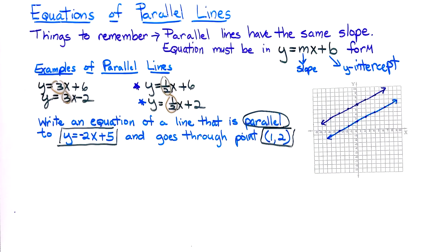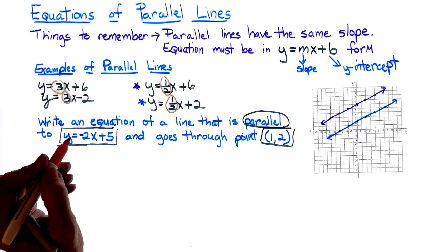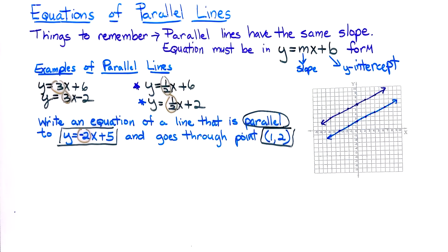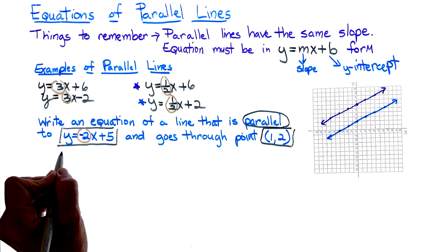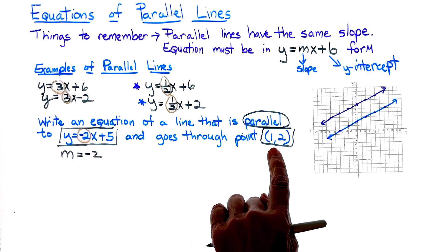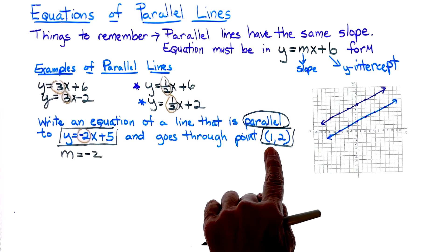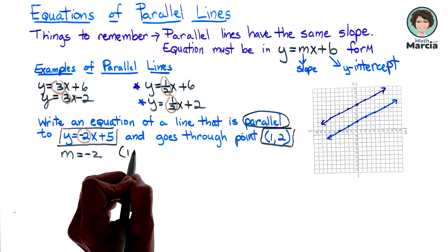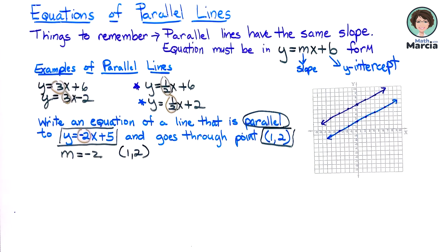Right away, I see that my slope for y equals a negative 2x plus 5 is a negative 2. So I'm going to write that information down: m is equal to a negative 2. And I'm going to write down the other information they gave me about this point. So it's going to go through our new line, point 1 and 2.